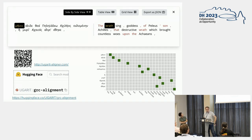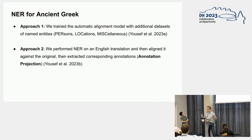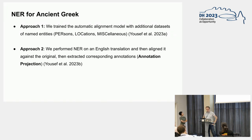The language model is published on HuggingFace and we built a user interface where users can copy and paste their text, click align, and get alignments with various visualization options. We then wanted to fine-tune this model on the NER task. We experimented with two approaches: the first was fine-tuning the language model we had — which was, as far as we know, the only multilingual ancient Greek model available.